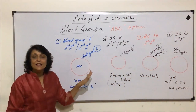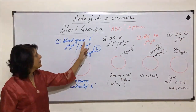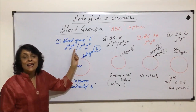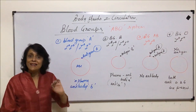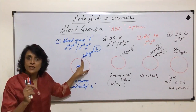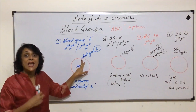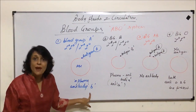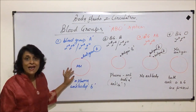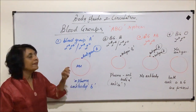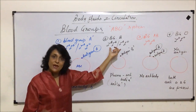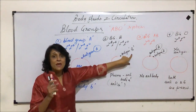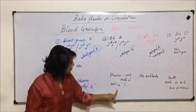To recap: in blood group A there are two possible genotypes — homozygous or heterozygous. Whenever there is a dominant allele it results in formation of a protein (antigen) via transcription and translation, which sits on the RBC surface and becomes 'self.' Since B would be foreign, the body prepares antibody b. For blood group B the situation is the same — antigen B is produced, B becomes self, and antibody a is present.